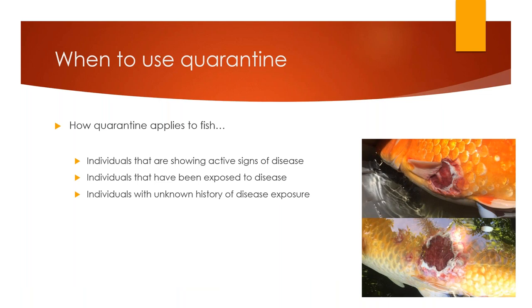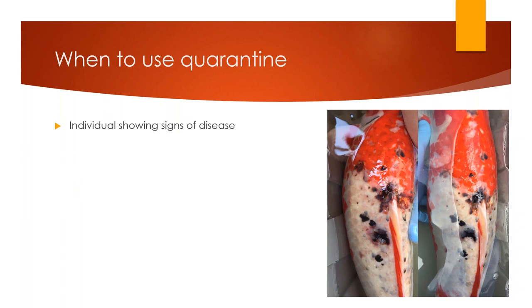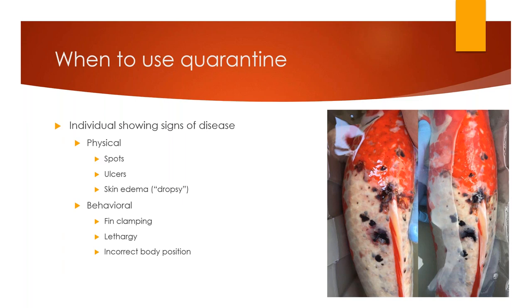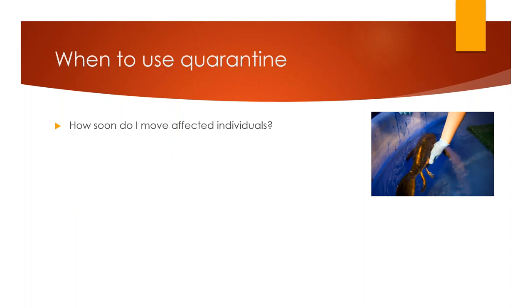Starting out with individuals showing signs of disease: this can be a physical manifestation such as the picture to your right, including spots, ulcers, and skin edema or dropsy. It can also be behavioral, such as fin clamping, lethargy, and incorrect body position — either head down and tail up or listing to the left or the right. The sooner you move a sick individual to quarantine the better, as this limits transmission and allows you to start treatment sooner. Quarantine systems are considerably smaller than the main system, so treatment is more effective and gives you more options.